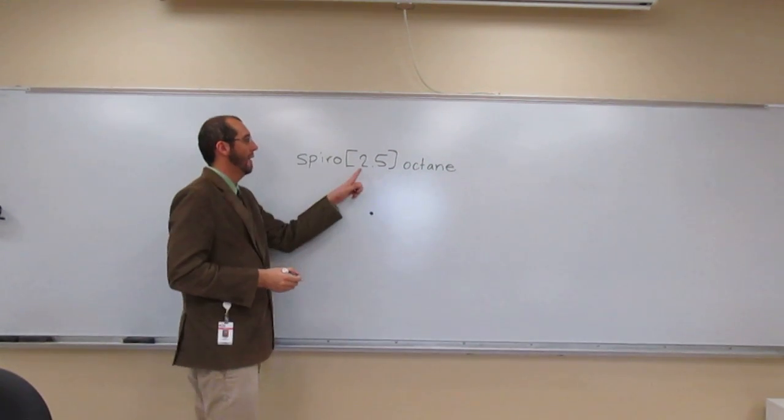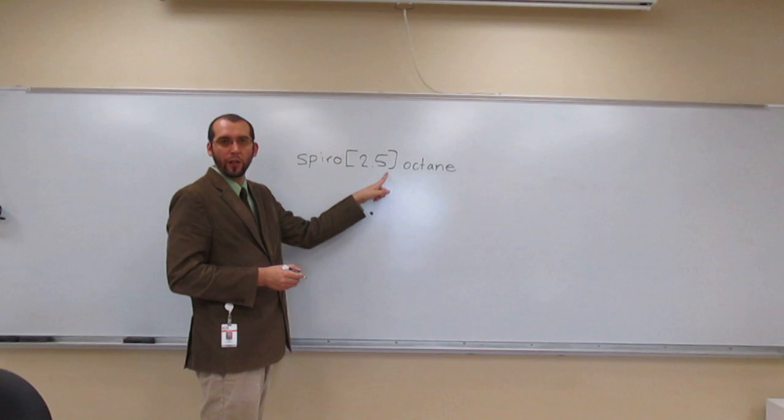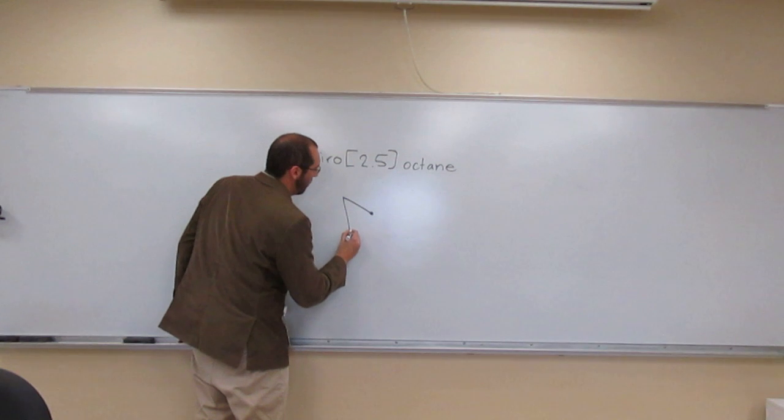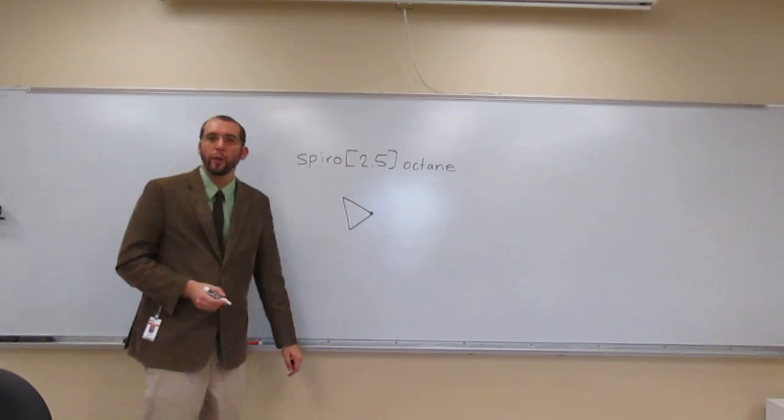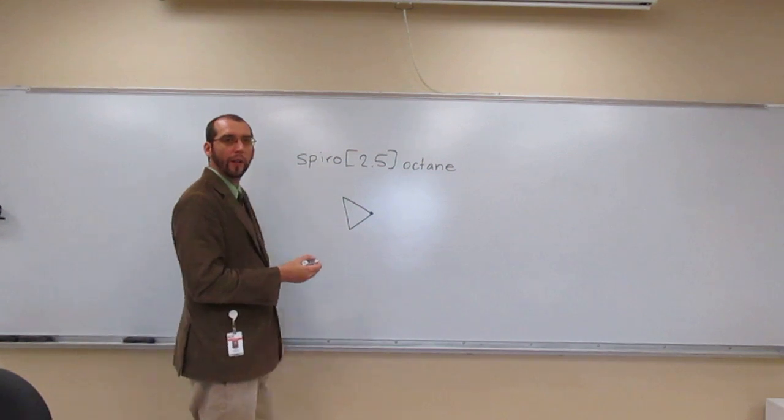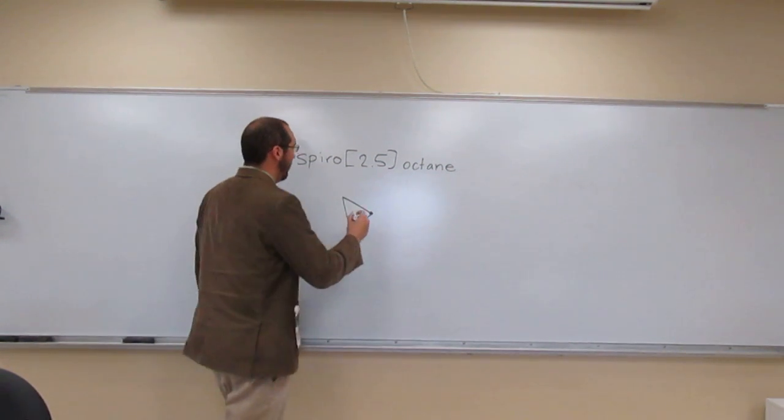And this just tells us how many to go away. So on one side, we're going to have one, two carbons, and then go back to the spiro center. And on the other side, we're going to have five carbons and go back.